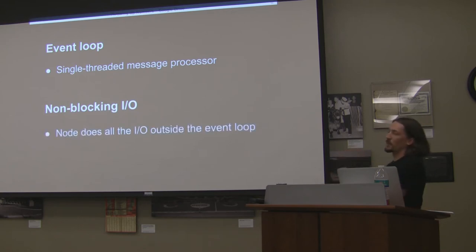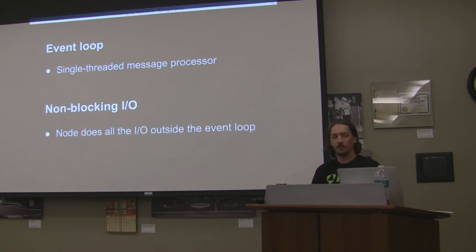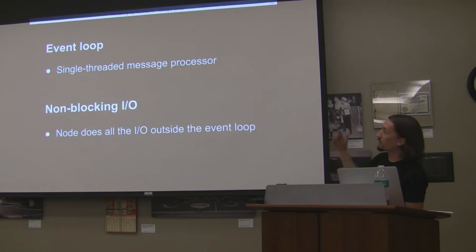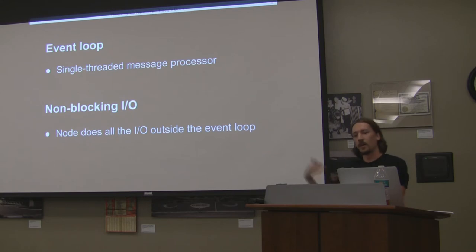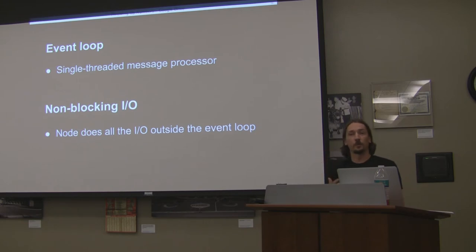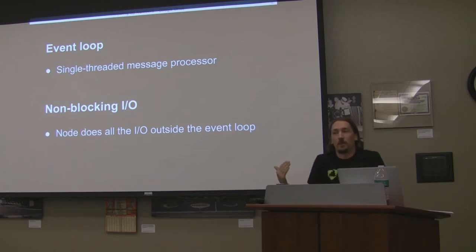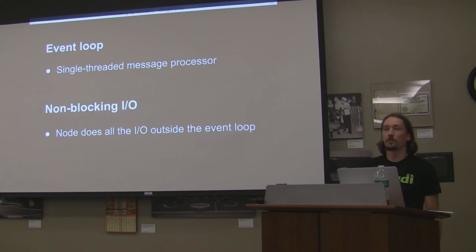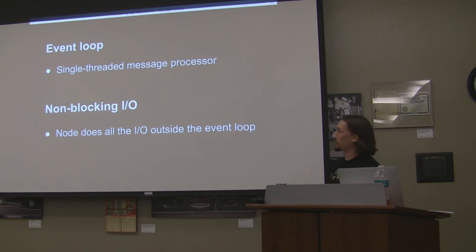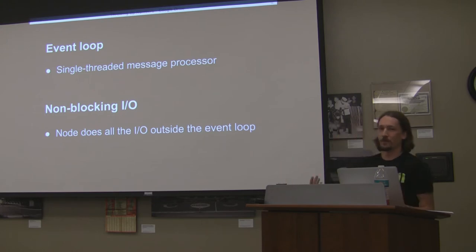Node takes those blocking operations and pushes them aside, outside of the event loop, handling them in its own hidden threaded environment. So the event loop is only ever operating on your code, not waiting for a network call to complete. If that assumption is broken and the event loop is working on a function that does block, your program won't process anything else. If you write an infinite while loop, it'll grind on that forever. This model isn't unfamiliar — JavaScript in the browser works the exact same way.